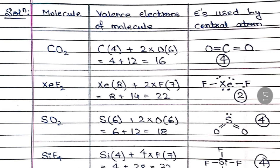For sulfur dioxide, sulfur has six valence electrons, and oxygen from the same group (group sixteen, chalcogen family) has six electrons which is twice of that, so 6 + 12 = 18. Sulfur dioxide is sp2 hybridized with sulfur using four of the valence electrons, hence the electrons used by central atom is four.